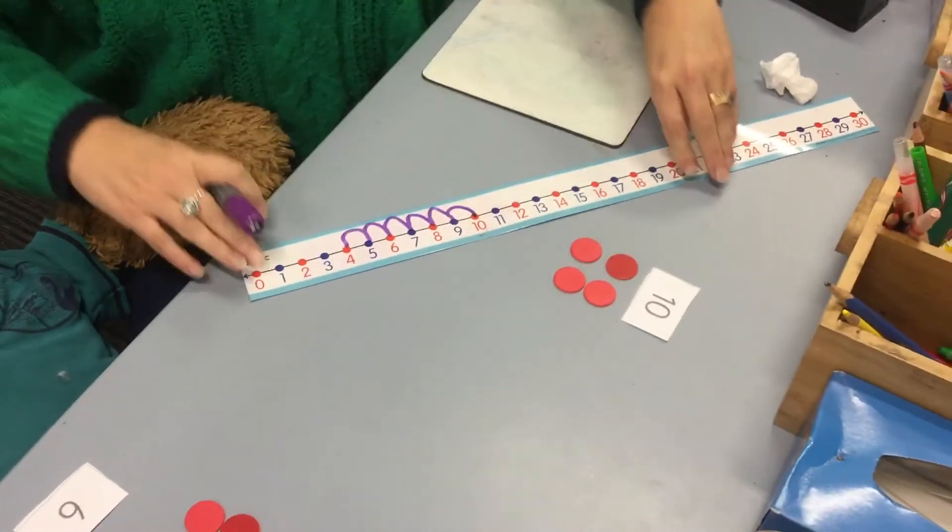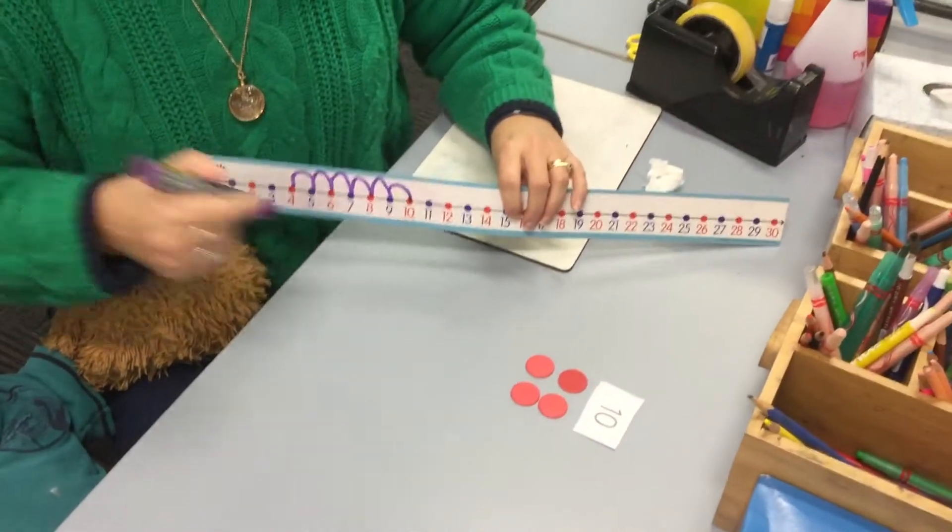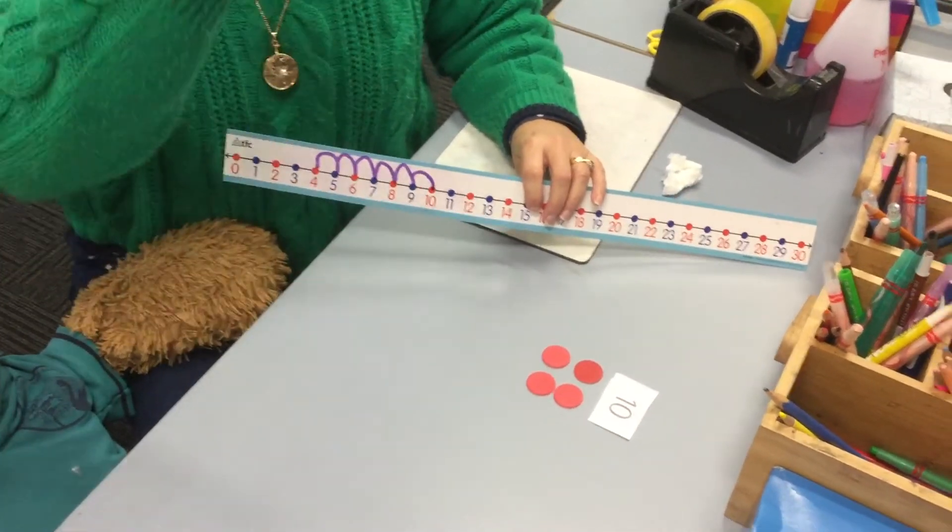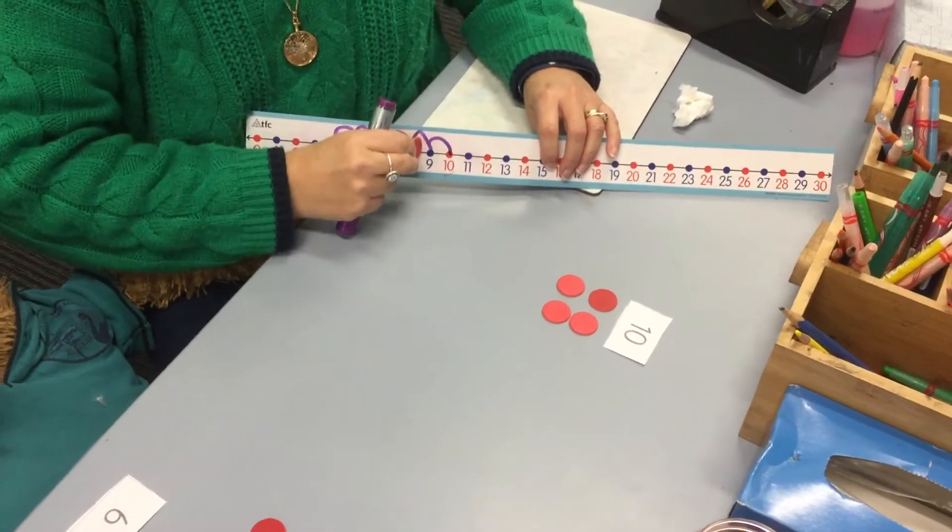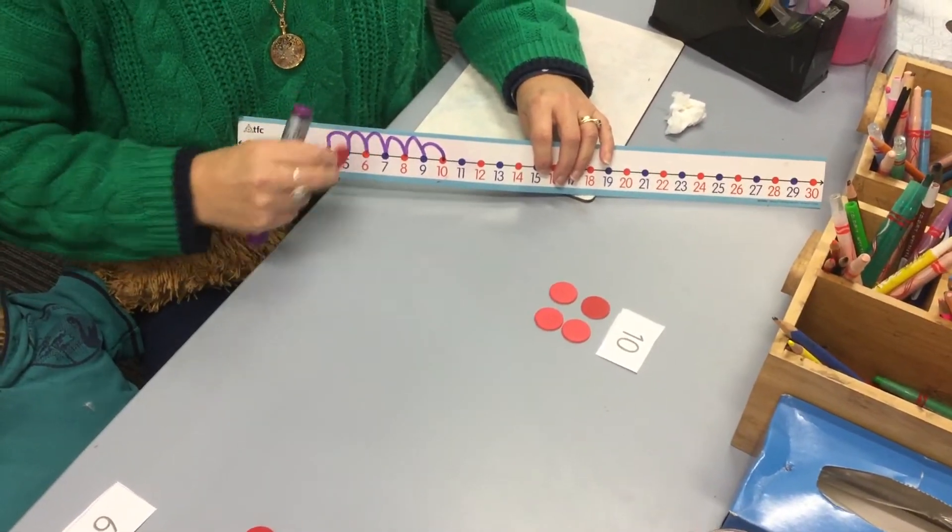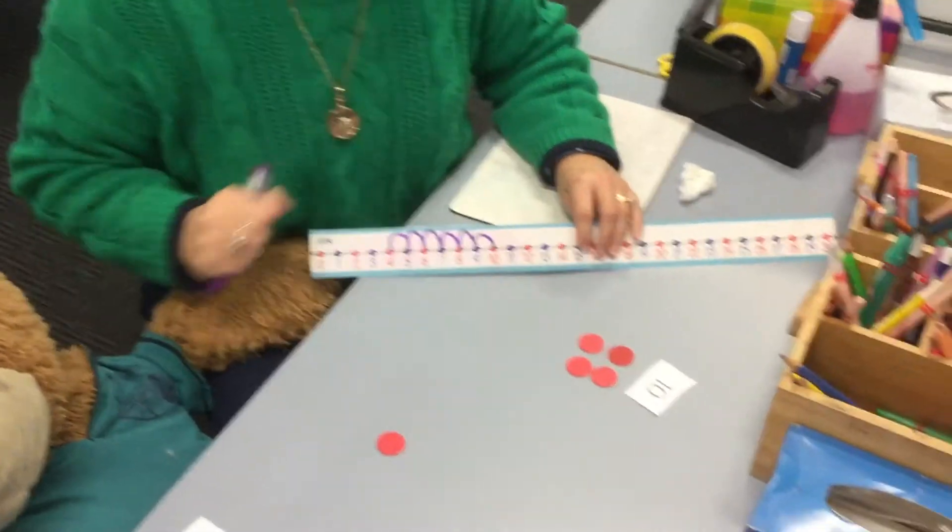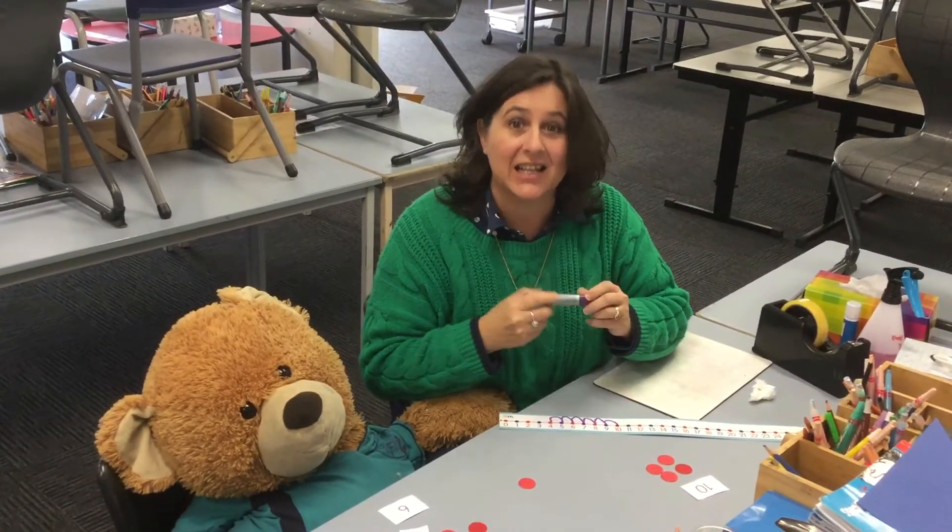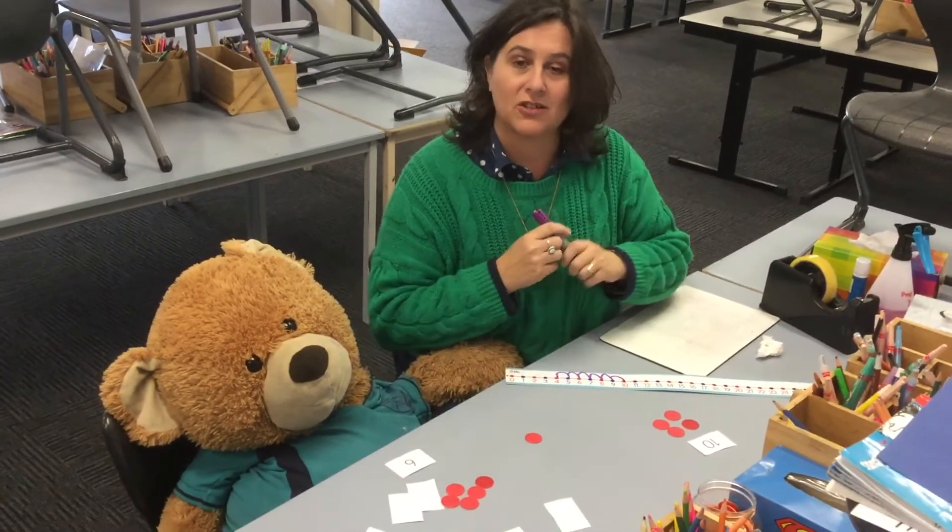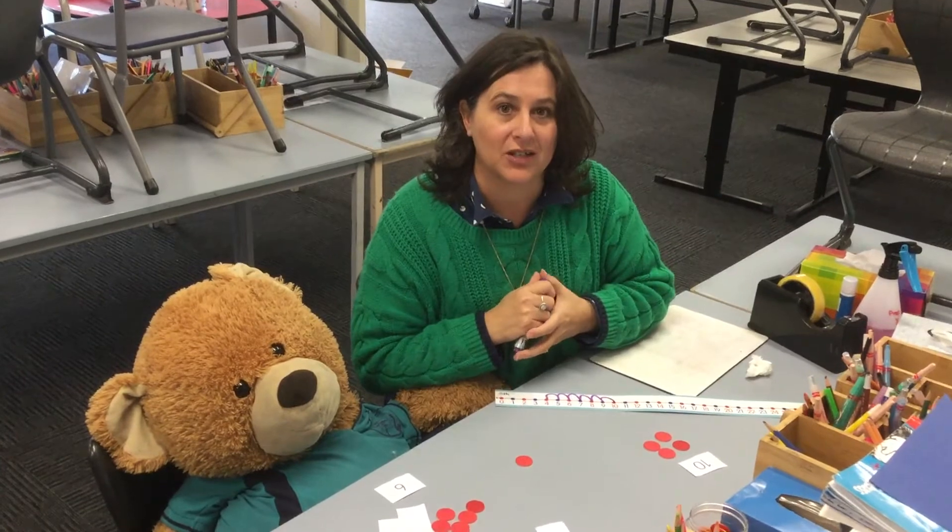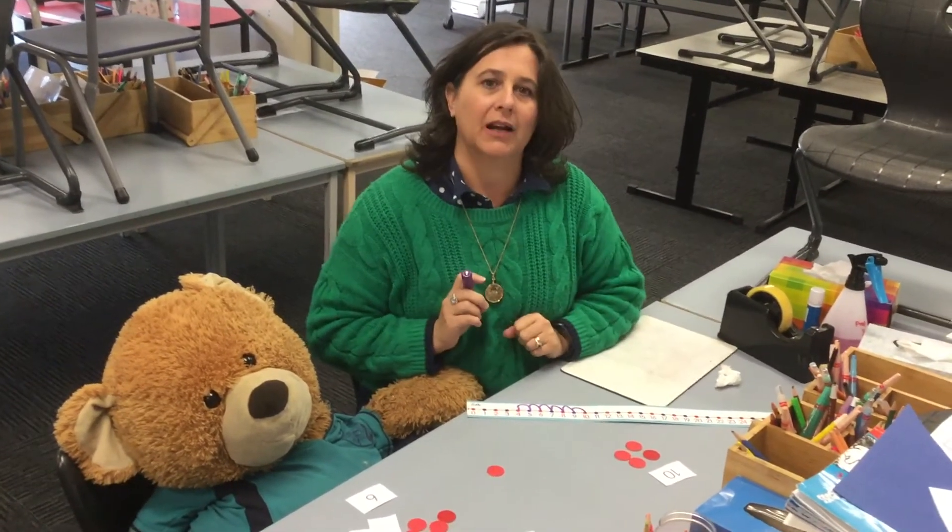Now if you don't have a number line that you can draw on like this at home, just use your finger or you could move a counter. And remember, we're always using the larger number to take away from. Okay, preps, have fun with this today. You can play it as many times as you like. If you're feeling really like a challenge, you could add some cards on here that might have teen numbers on it and have a go at that. I hope you enjoy your activity today. Hope you've got a lovely turn like Big Ted here to help you out. I'll see you tomorrow, bye!